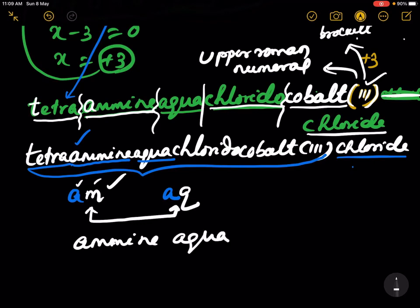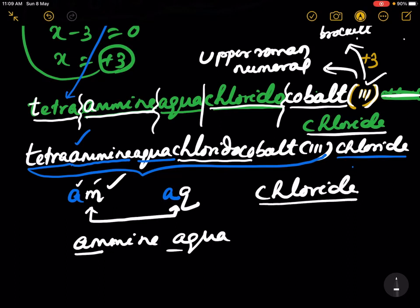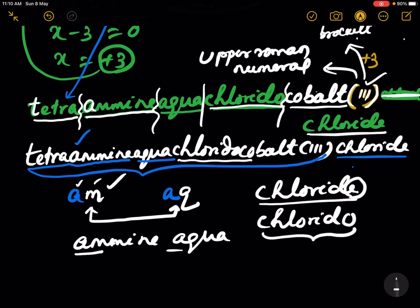Aqua comes next, then chlorido. Chloride is written as chlorido because chloride is a negative ligand — the E is converted to O: C-H-L-O-R-I-D-O, so it is chlorido. Thank you for watching the video till the end.